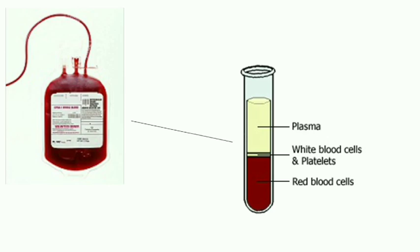Each unit of blood donated is separated into 3 major components: 1. Platelets, 2. Plasma, 3. Red Blood Cells.